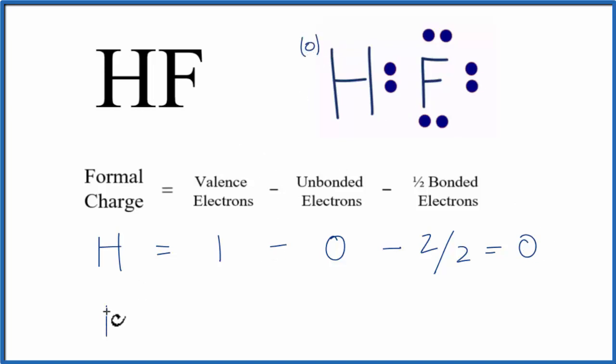Next, let's do the fluorine. Fluorine is in group 17, sometimes called 7A on the periodic table, so it has 7 valence electrons. We'll subtract the unbonded valence electrons. We have 2, 4, 6 of those.